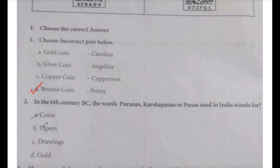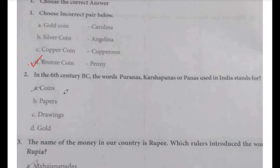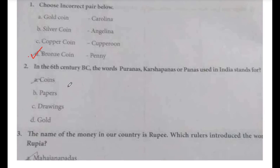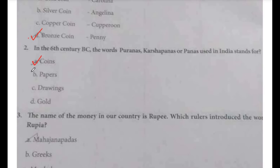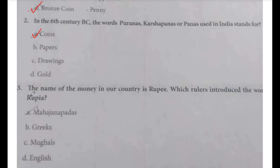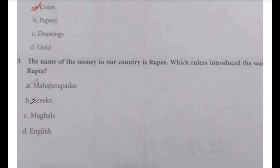First question: choose the incorrect option. Bronze coin and penny — this is incorrect. Next, in the 6th century BC, the words Puranas, Karsha Panas, or Panas used in India stands for coins. Option A.